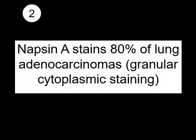Second important fact: Napsin A stains 80% of lung adenocarcinomas, and the staining is granular and cytoplasmic. Now 80% is more or less what TTF1 stains, so the sensitivity is roughly equivalent. Different papers have different numbers, and so this 80% is more or less an average of all the papers that have looked at Napsin A staining in adenocarcinomas of the lung. So remember, 80%.